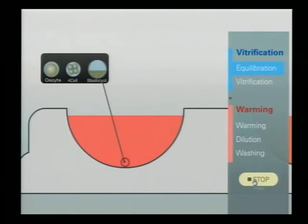The procedure protocol for the vitrification of blastocyst and the four-cell and oocyte is the same. Then the volume, okay, shrinkage begins. You will see the maximum shrinkage at the time of around 90 seconds. So all the blastocyst cavity disappears in this step.